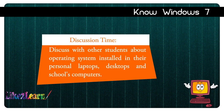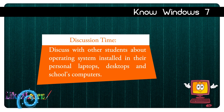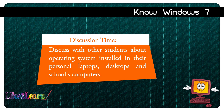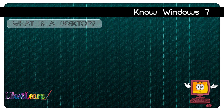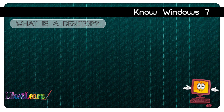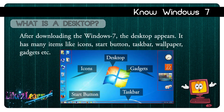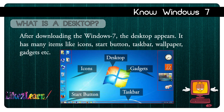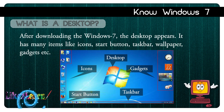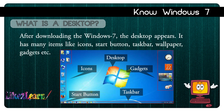Discussion time: discuss with other students about the operating system installed in their personal laptops, desktops, and school computers. What is a desktop? After loading Windows 7, the desktop appears. It has many items like icons, start button, taskbar, wallpaper, gadgets, etc.